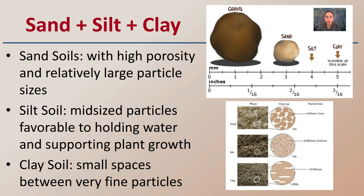Then we have silt soil, which has midsize particles. While it may look like a big jump from sand to silt in the image, clay is even smaller. That silt, being midsize, is favorable for water holding and supporting plant growth. Typically, a lot of farm-type soils have a good percentage of silt in them. Then lastly, we have clay, which has very small spaces and very fine particles. Because of that, those particles tend to fold and lay together — almost like the pages of a book stacking on top of one another — giving it an almost sticky-like consistency.